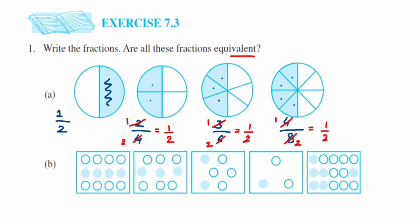For the second question, I'll first write down the fractions. There are twelve circles total with four shaded — four upon twelve. Next, nine circles with three shaded — three upon nine. Then six circles with two shaded — two upon six. Next, three circles with one shaded — one upon three. And the last one has fifteen circles with six shaded — six upon fifteen.